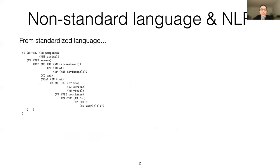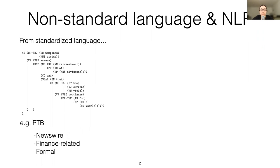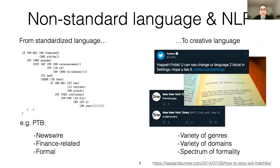Rule-based and early statistical NLP systems were built for standardized language, usually within a single domain and genre. For example, this sentence here is from Penn Treebank, sourced from the Wall Street Journal, which is a formally written financial news source. But now we want to apply our systems to a variety of domains and genres — ideally, we would want a single machine translation engine that can translate sentences both from Twitter and from the Wall Street Journal.